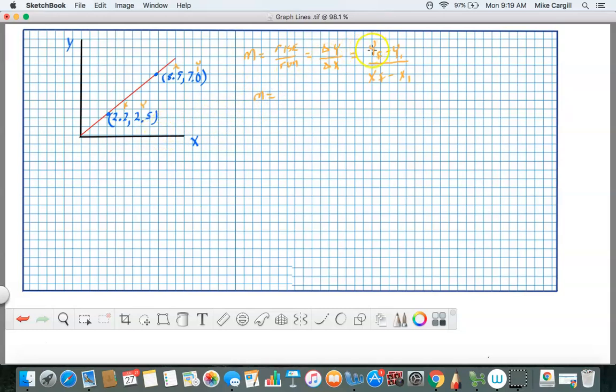So let's go ahead and just figure the slope. For this particular line, slope would equal y final which is 7.0 subtract 2.5, and then we're going to divide that by the final of x, 8.9, minus x initial which is 2.2.